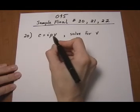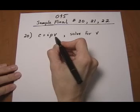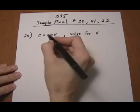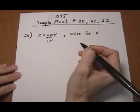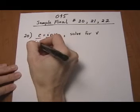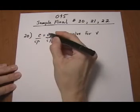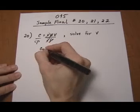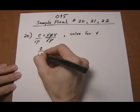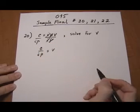I and P are both being multiplied onto V, so if we want to clear them to the other side, we need to divide them off. So if we divide both sides by IP and balance it on the left, on the right side, I's cancel, P's cancel. So we're left with our answer, C over IP equals V.